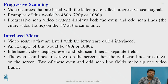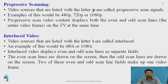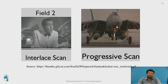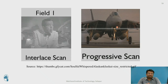Video sources listed with the letter 'p' are called progressive scan — for example, 480p and 720p, where 'p' stands for progressive scan. If there is an 'i', it is called interlaced video. In progressive scan, video content displays both even and odd scan lines at the same time, so the entire video frame is displayed simultaneously. In interlaced scan, the even scan lines are drawn first, then the odd scan lines — these two fields together make up the video frame.